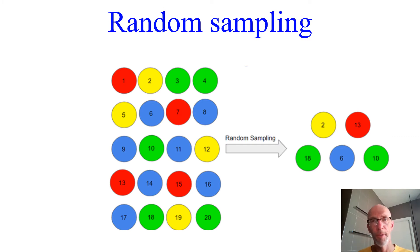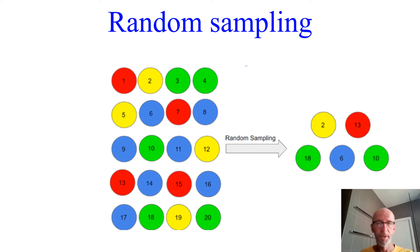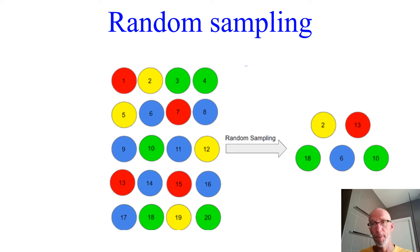Alternatively, we could try random sampling. What we need is a list of all members of our population of interest. If I narrow my population to young basketball referees in Melbourne, I need a database of all those names. Going old school, I could put all those names in a hat and pick out 50, so that every member of that population has an equal chance of being selected. The advantage is we generate a more representative sample. The limitation is it's going to be time consuming and potentially costly to get that database of all registered basketball referees in Melbourne.